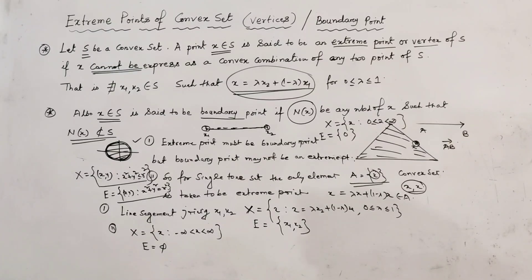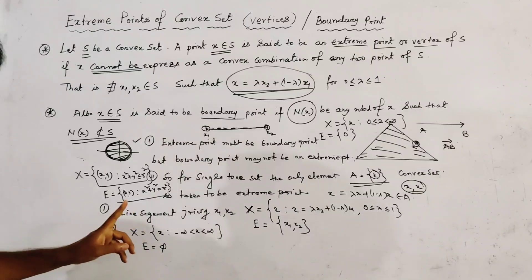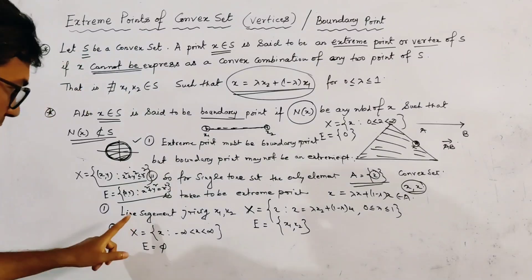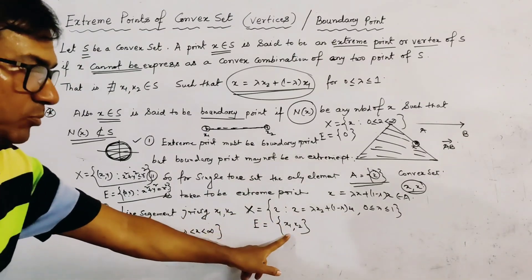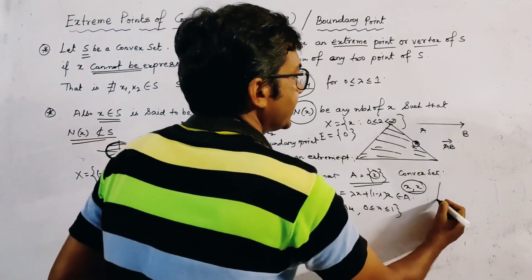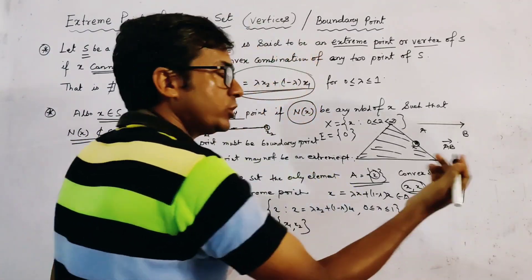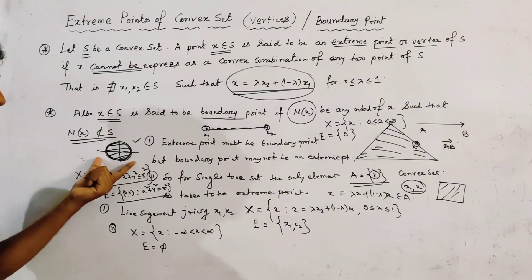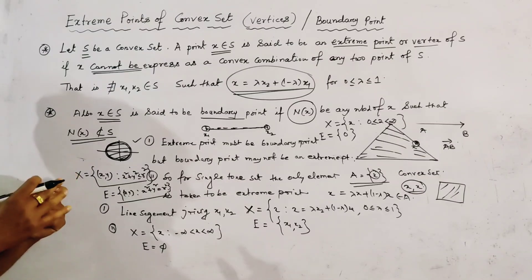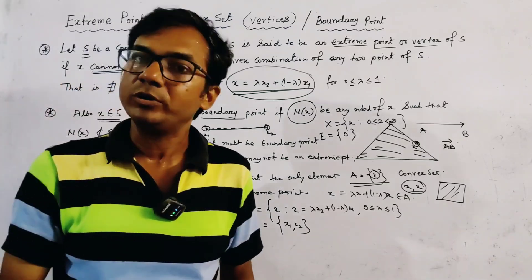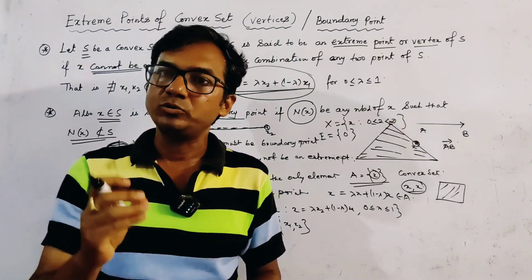So we have given examples of convex sets: one with no extreme points (straight line), one with only one extreme point (ray), one with only two extreme points (line segment), one with only three extreme points (triangle). If we need four extreme points, we can take a square, rectangle, or quadrilateral. And the circular disk is an example of a convex set with infinitely many extreme points. All these examples are very important.